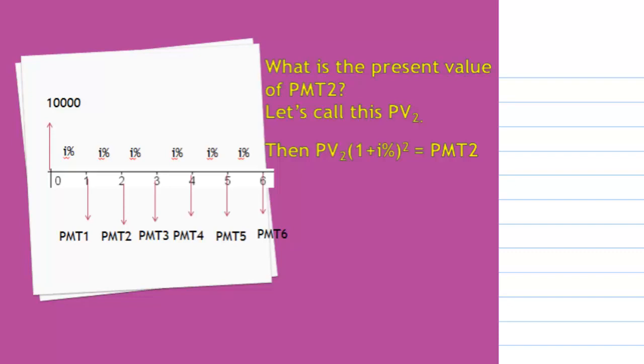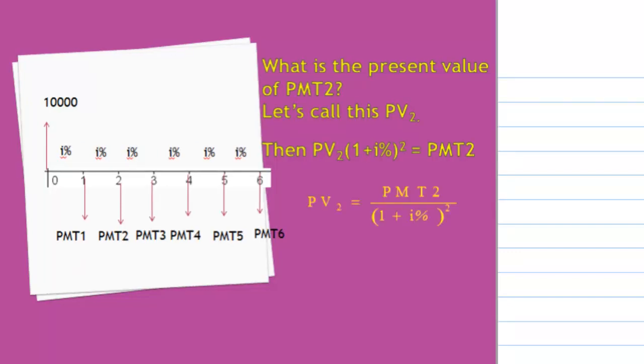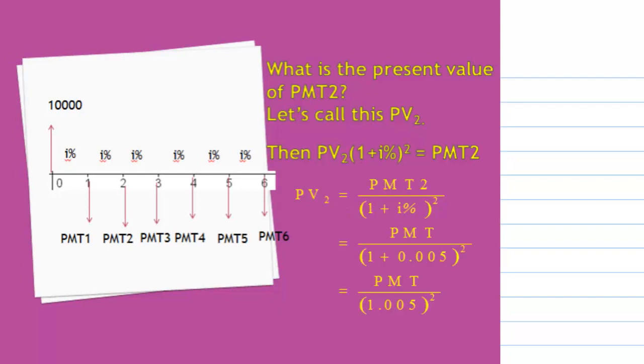What is the present value of PMT2? Let's call this PV₂. Because the interest is compounded over two periods, PV₂ times (1+I%)² equals PMT2. That means PV₂ equals PMT2 over (1+I%)², which equals PMT over 1.005².